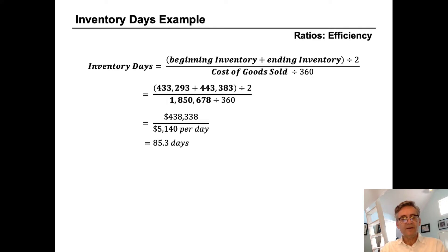So we divide now to get to our inventory days and we find that Hasbro has 85.3 days of inventory on hand. So in other words, it would take Hasbro 85 days to sell all the inventory that they currently have.